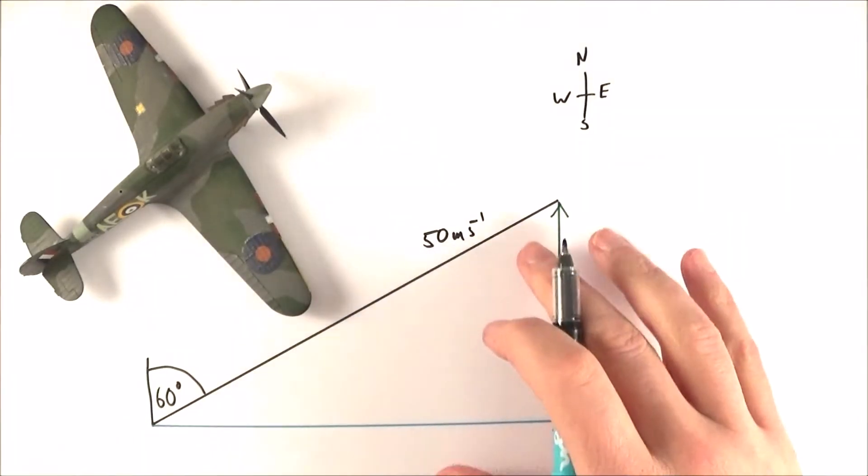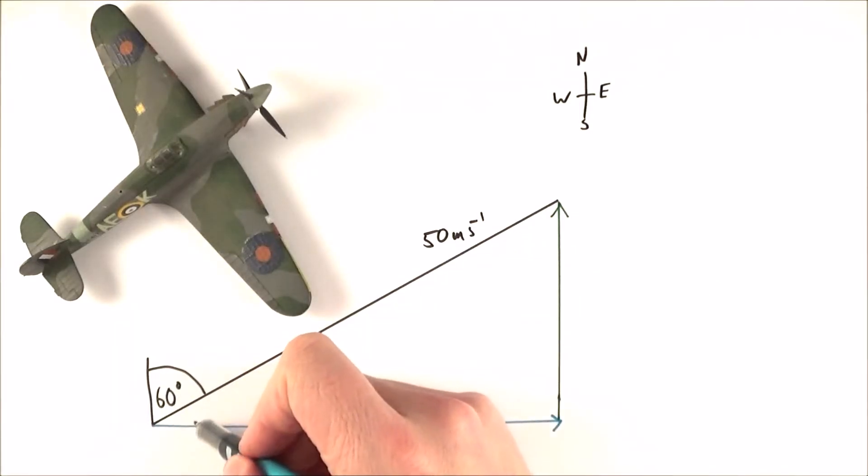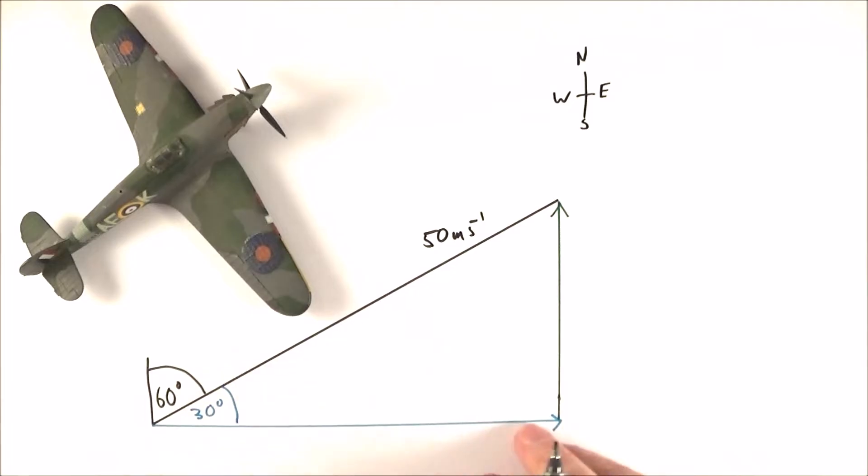And we can do this by using a straightforward bit of SOHCAHTOA. So if this angle here between north and the velocity vector is 60 degrees, then this angle in here must be 30 degrees. And what we can then do is start to see how this triangle relates to just a normal right angle triangle.